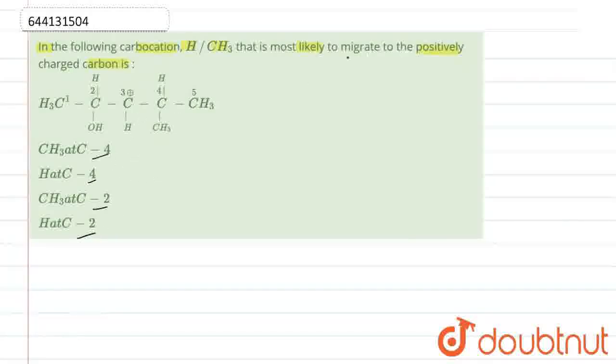So, let's see which is most likely to migrate to the positively charged carbon atom. If we can see that from 2 to 2nd, what we require, we need to say that here, we are having lone pair on OH.